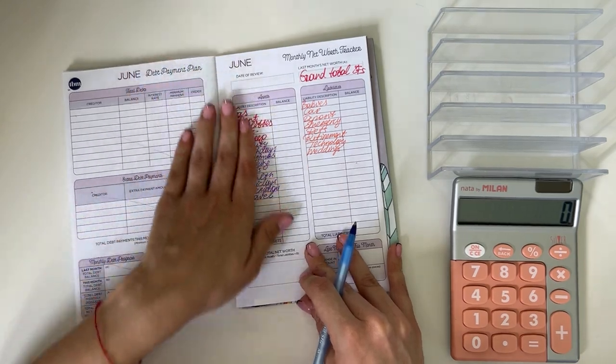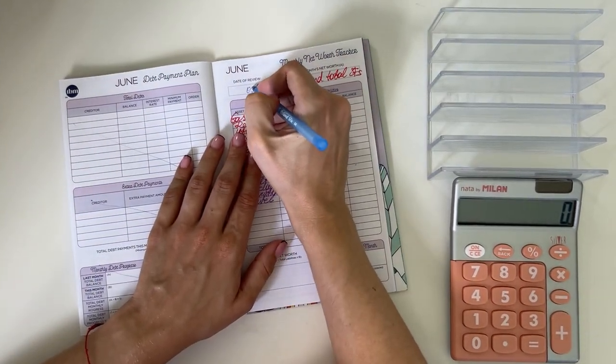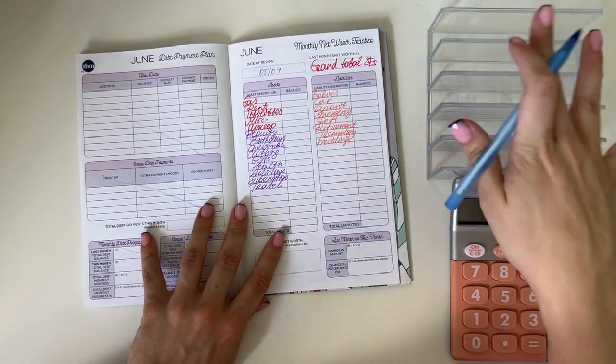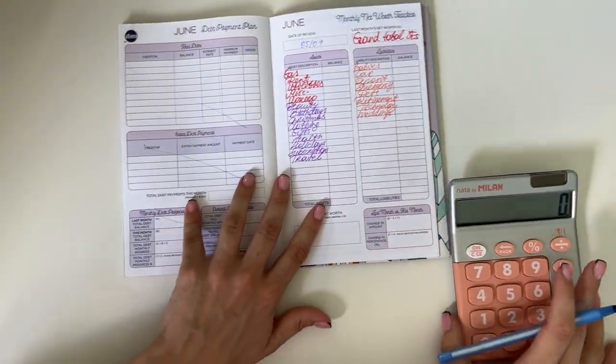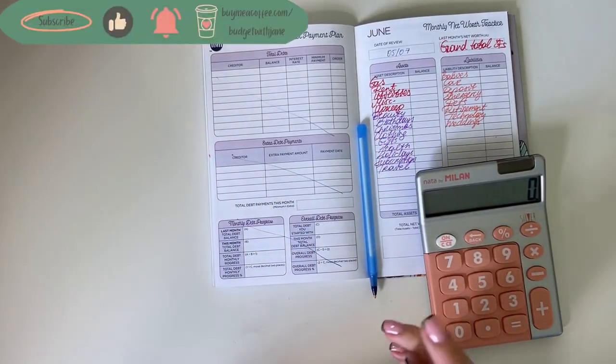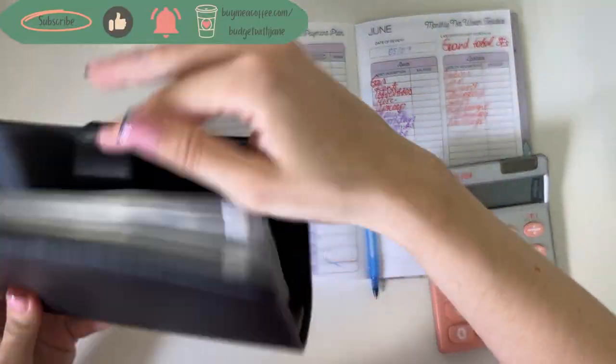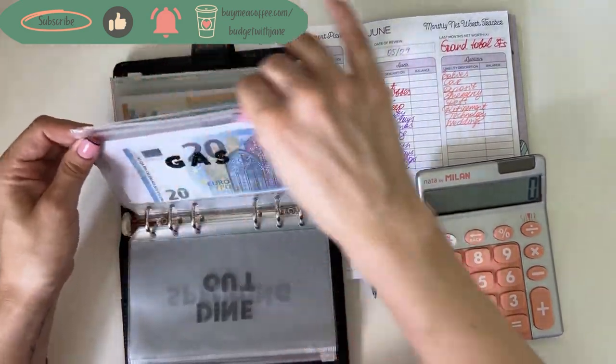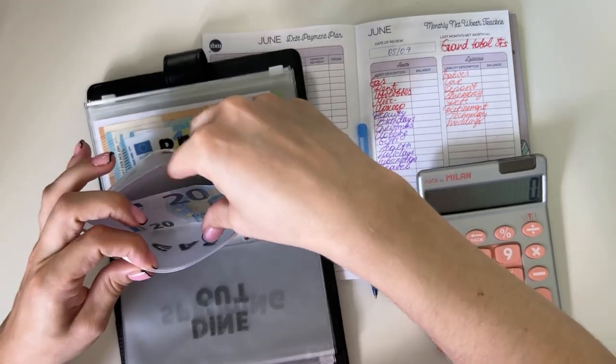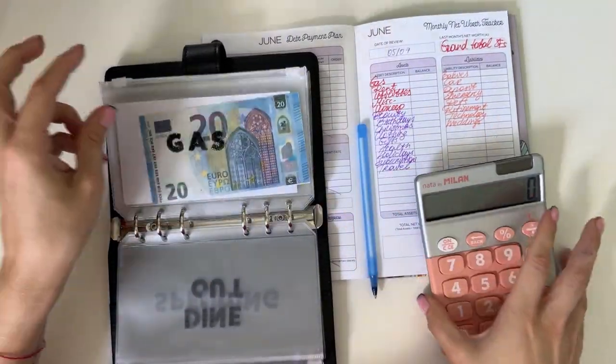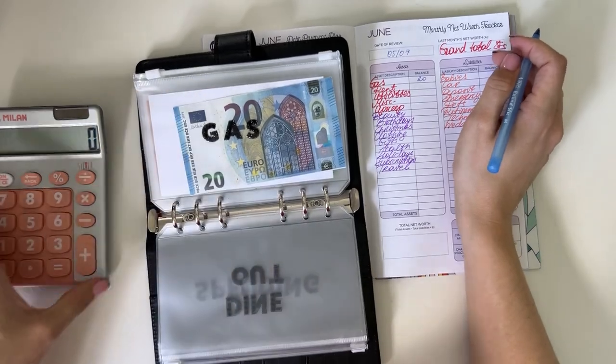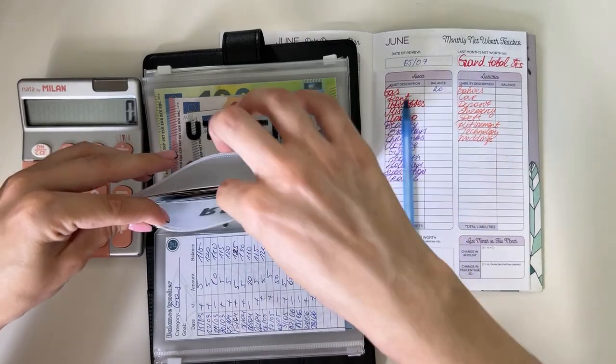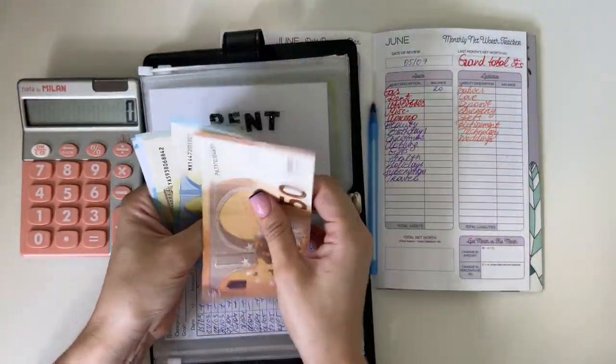As usual, we're going to start with updating our grand total of the sinking funds. Today is the 5th of July. I don't think we're going to need the cash tray, so I'm just going to move it off. Let me grab my first binder, my black binder, and let's get to counting.